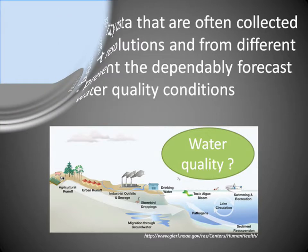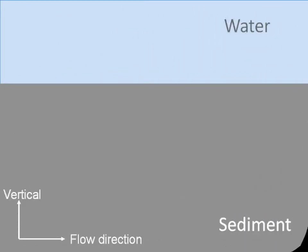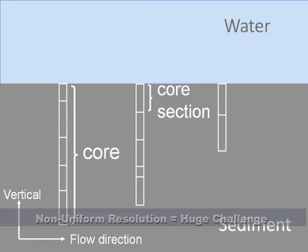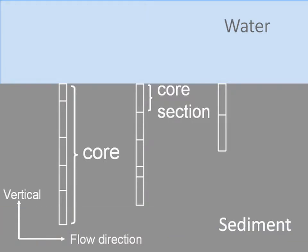Currently, water quality investigations begin with drilling and collecting core samples at various locations. However, these sections are rarely uniform in length and only average values are measured per section. The non-uniform resolution of these datasets leaves a huge challenge for traditional mapping methods.